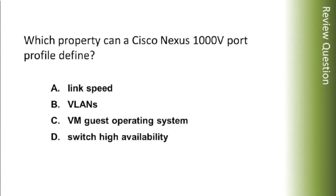Finally, what property can a Nexus 1000V port profile define? Link speed, VLANs, the VM guest operating system, or switch high availability? This is a choose-one question — we can indeed assign the appropriate VLANs for the port with a port profile. If you didn't remember this from the design course, we'll be walking through it in the implementation course as well.